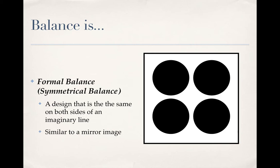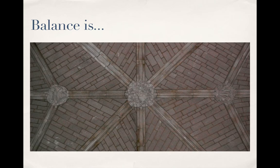In this simple example, you have the exact same circles on both sides of that center line. In the photograph, if I look at the center of that photograph, what's happening on the left is being reflected or a mirror image on the right side.